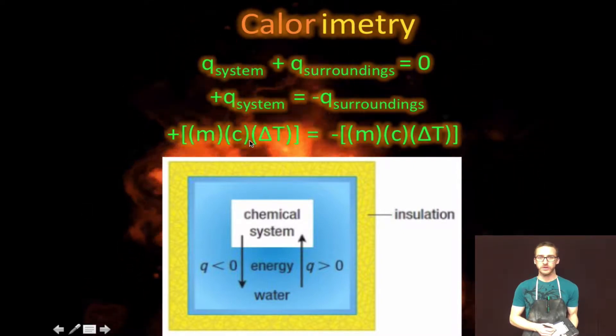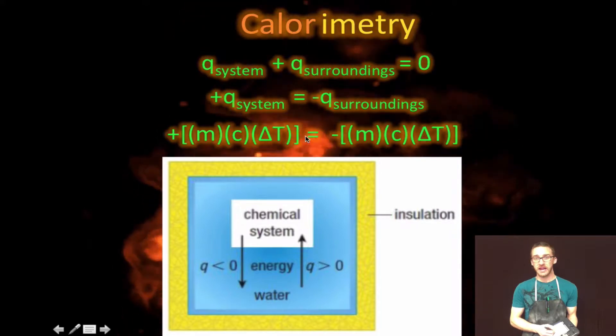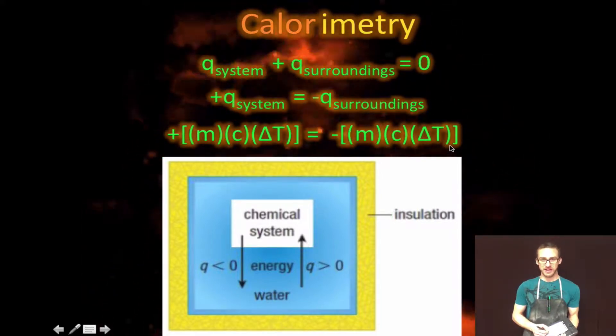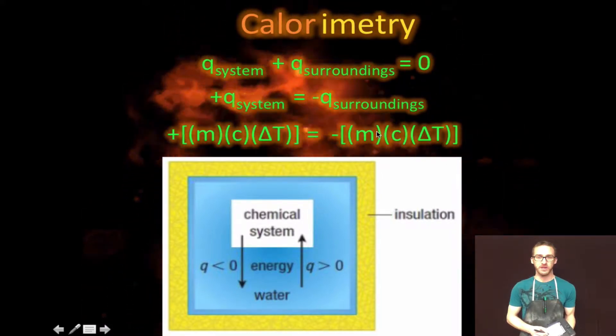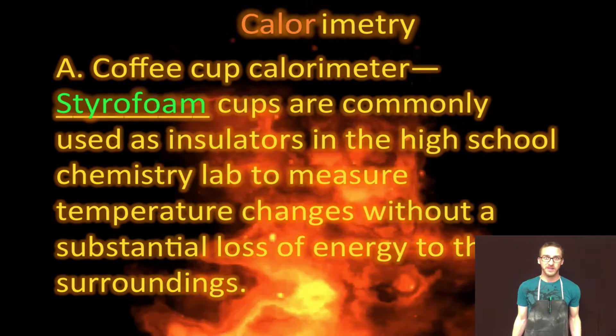And because Q is equal to the formula MC delta T, positive MC delta T equals negative MC delta T. Take a moment, think about that formula, examine the image that's on your screen and in your notes.